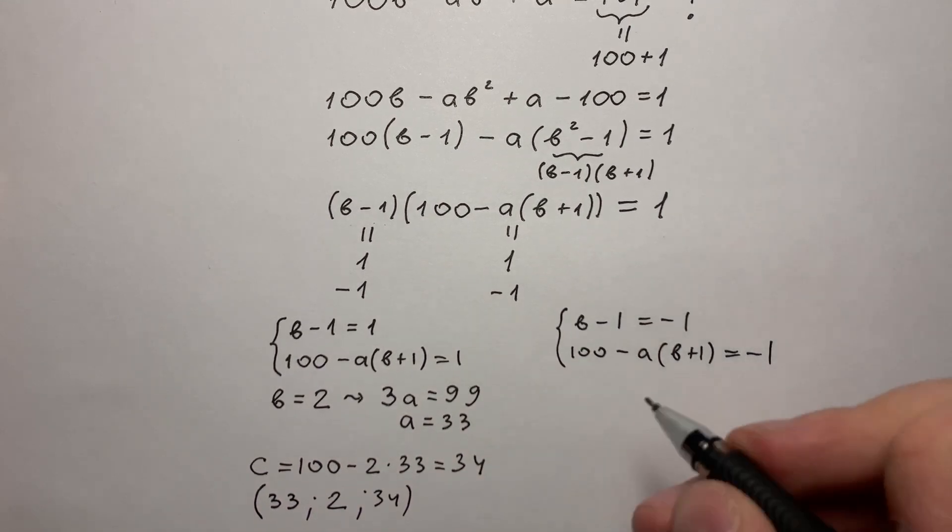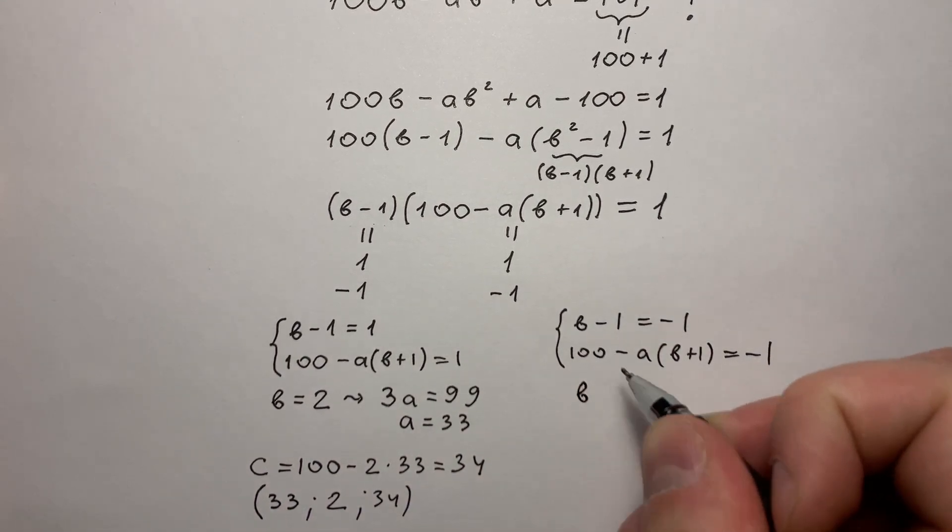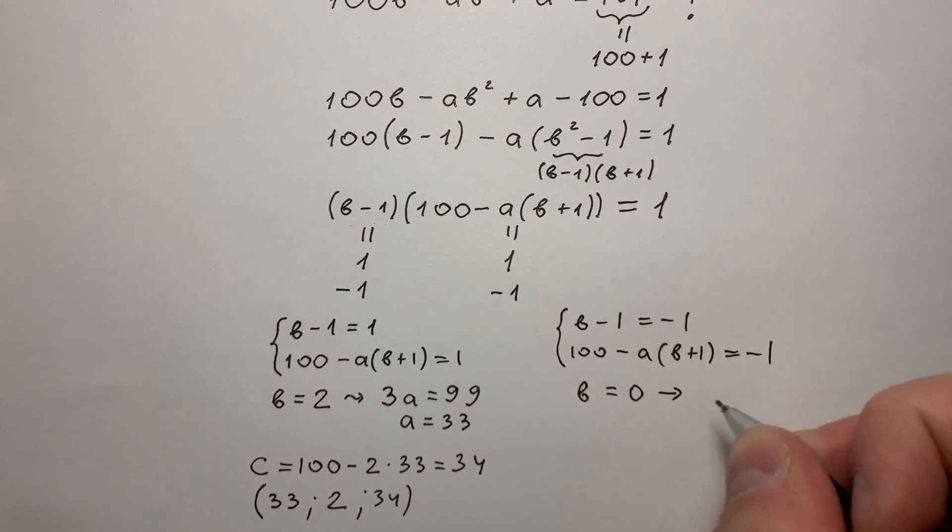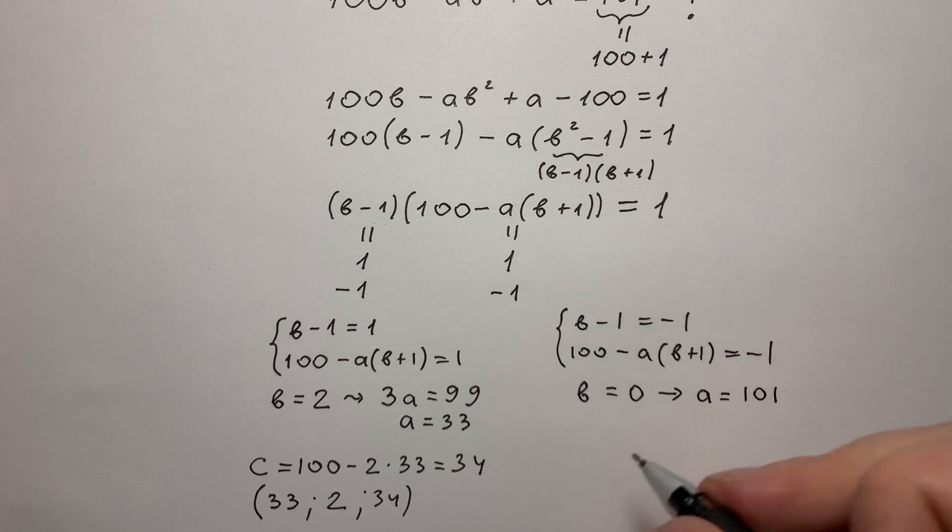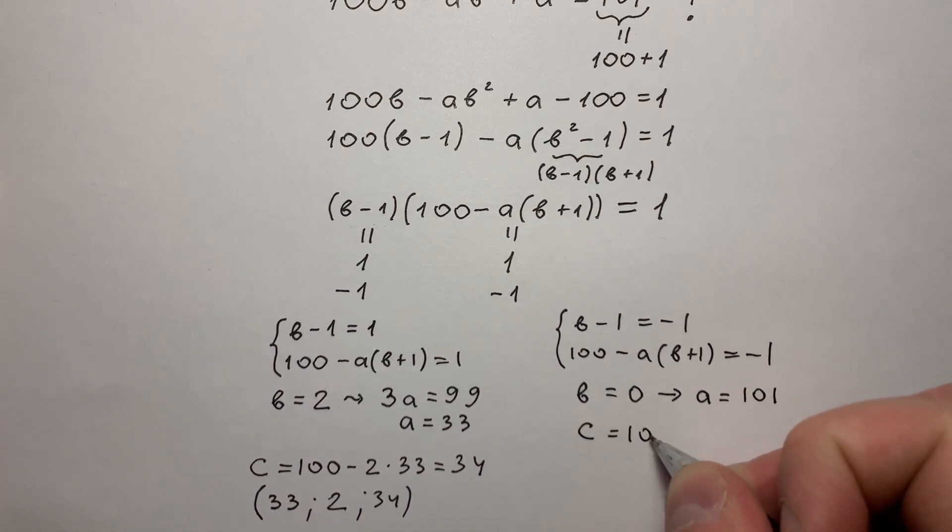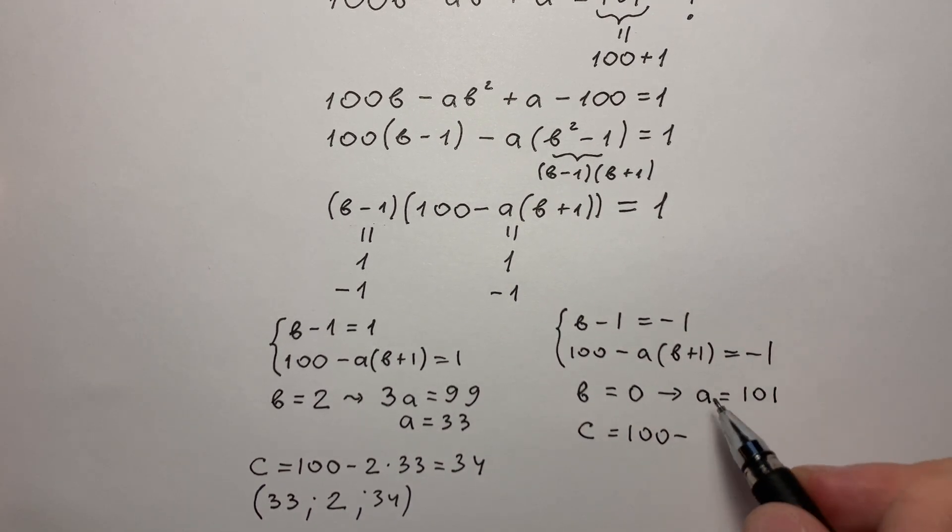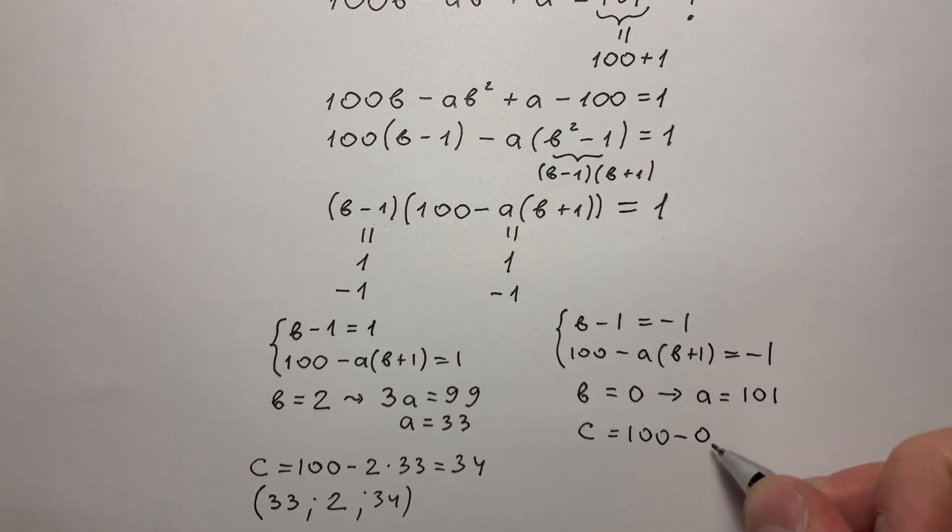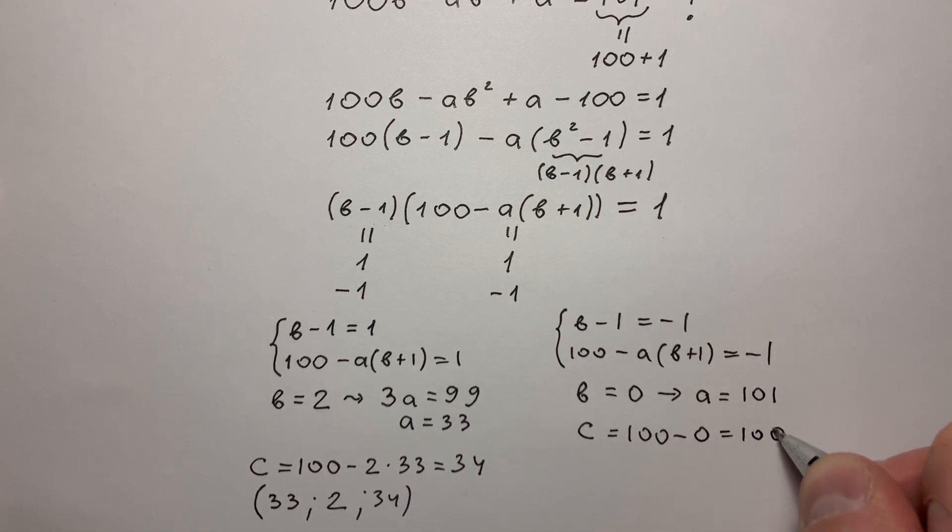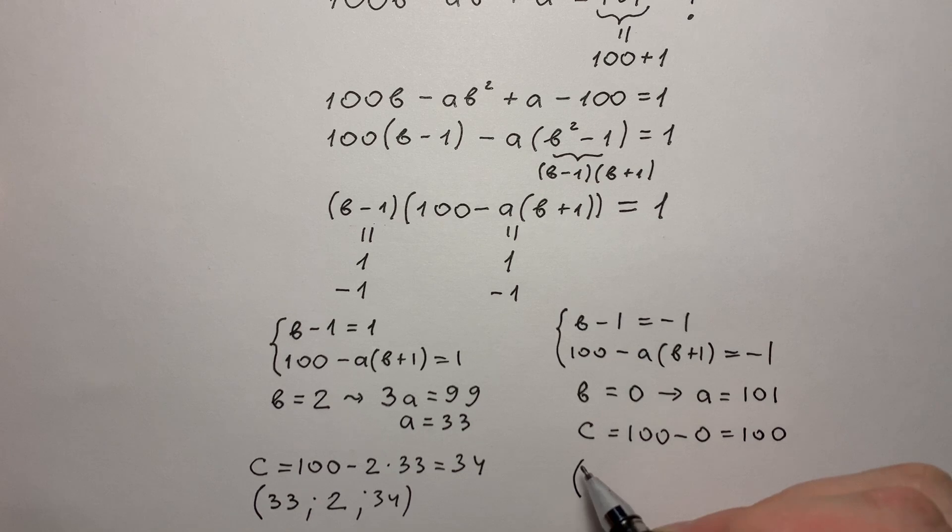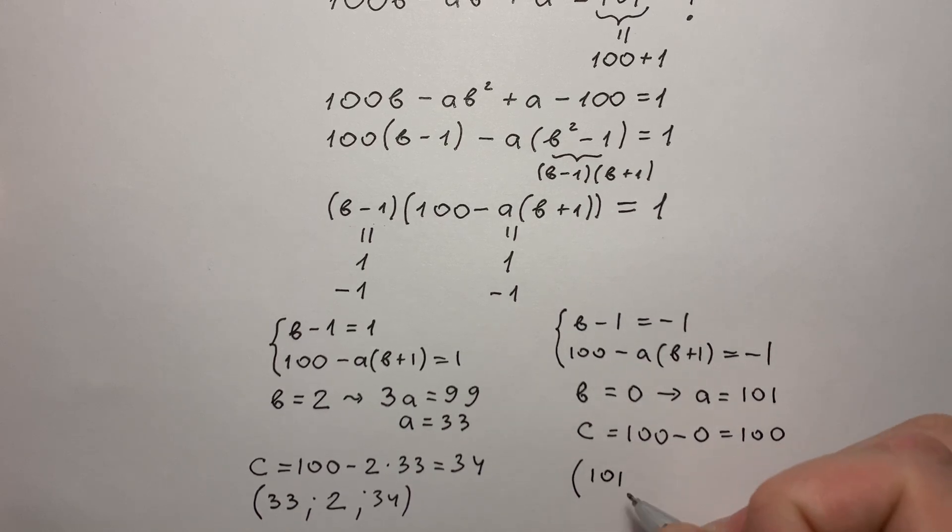And the second solution is much more simple. B equals 0. That's why A equals 101 and C equals 100 minus AB. Since B equals 0, C equals 100. So second solution: A equals 101, B equals 0, and C equals 100.